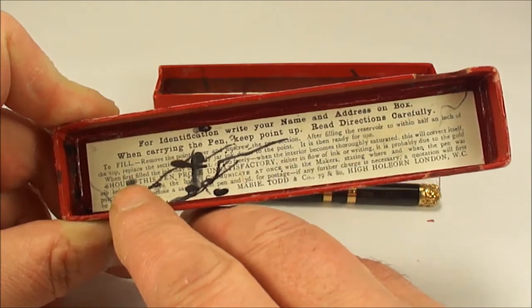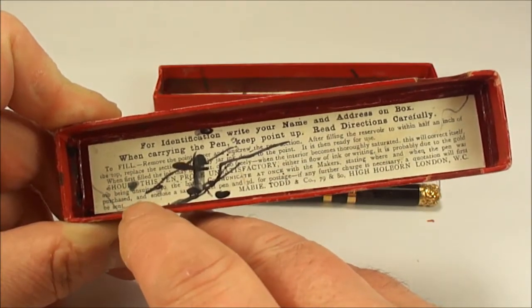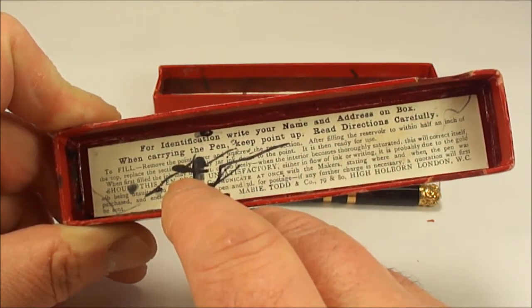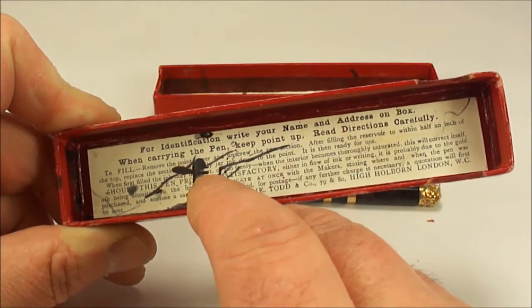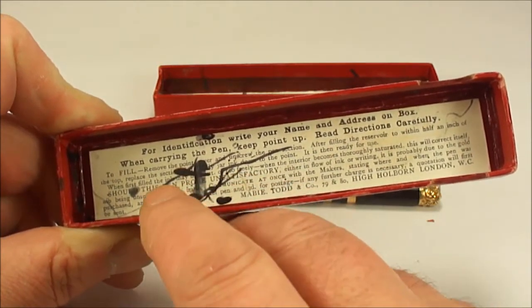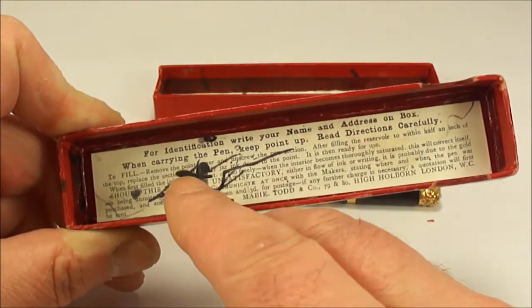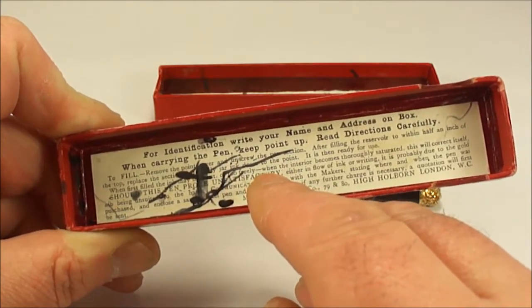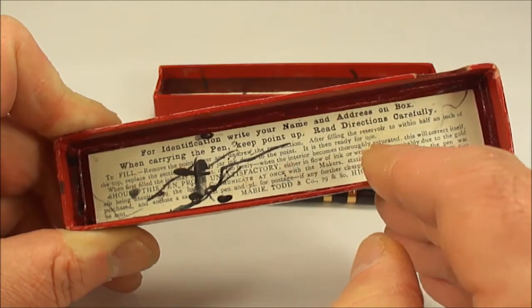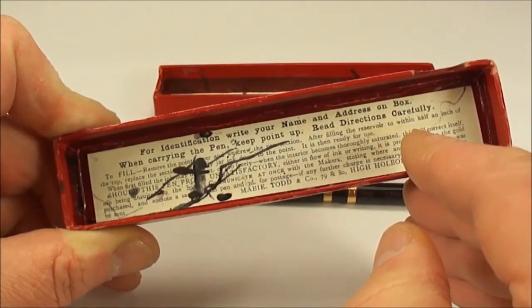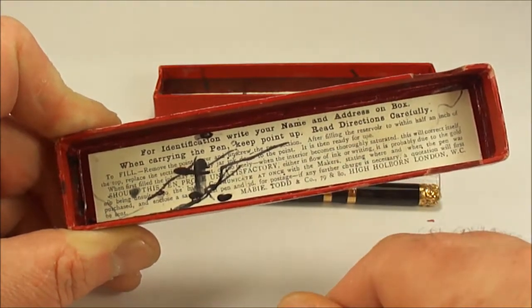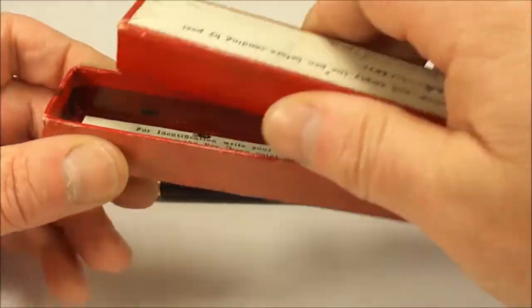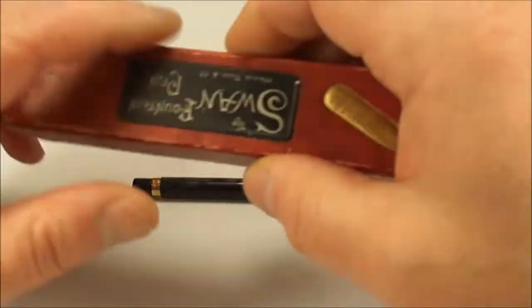It also says when first filled the ink may blob or flow freely. When the interior becomes thoroughly saturated this will correct itself. So these particular pens may have a couple of little issues when you start writing with them, but it should correct itself. Let's put the box to one side.